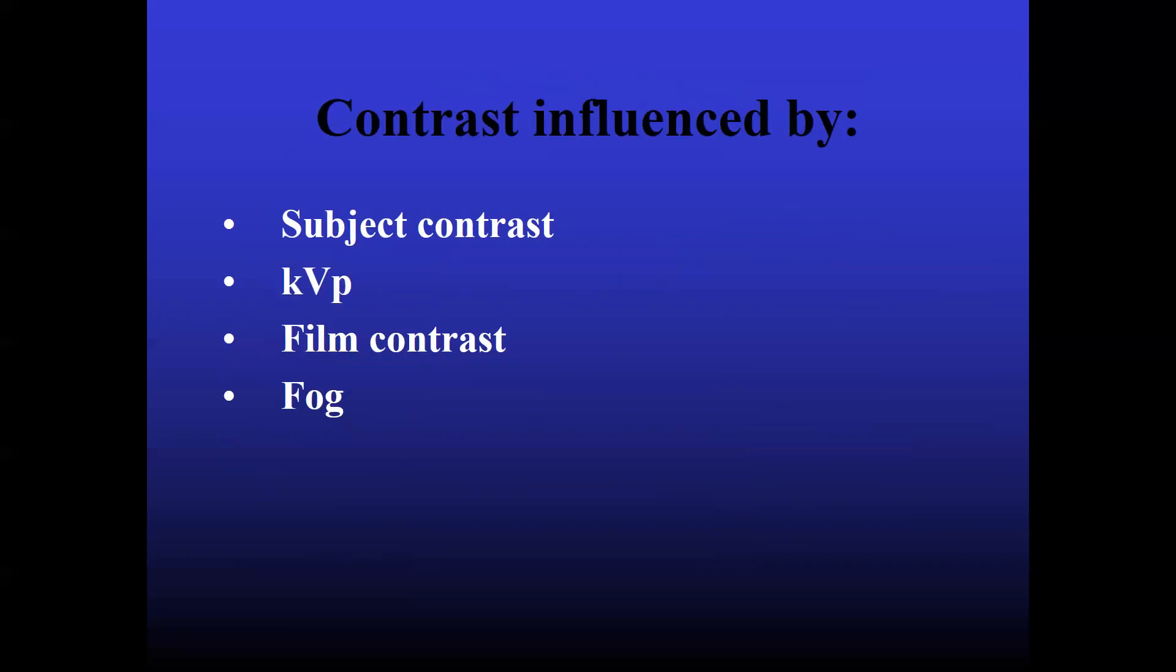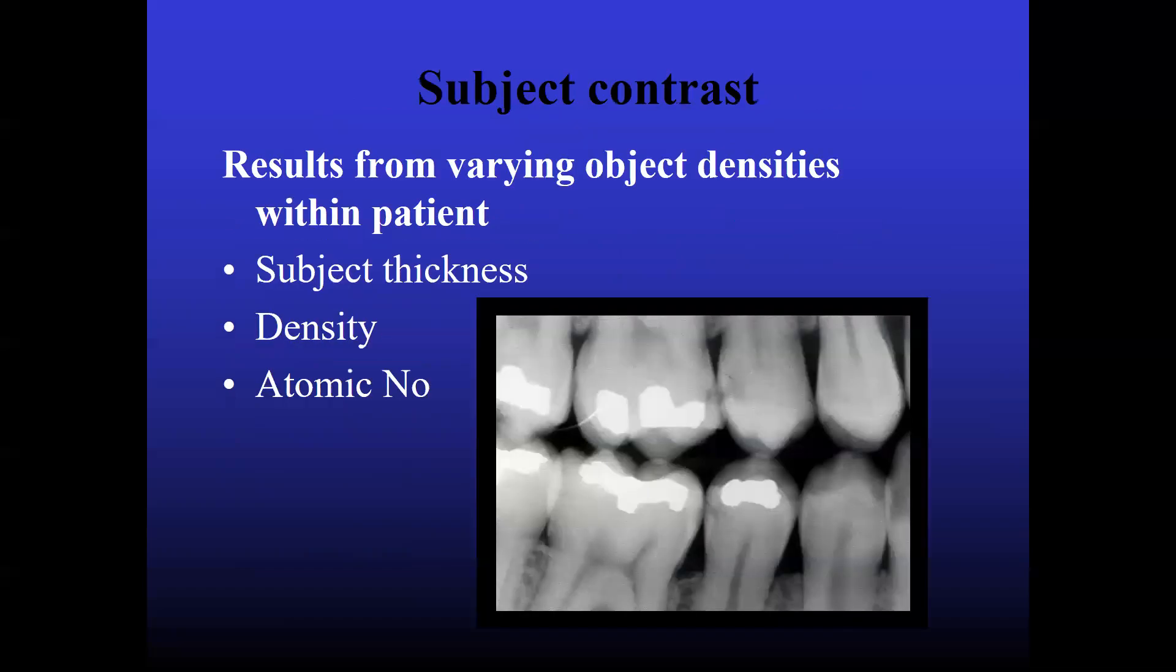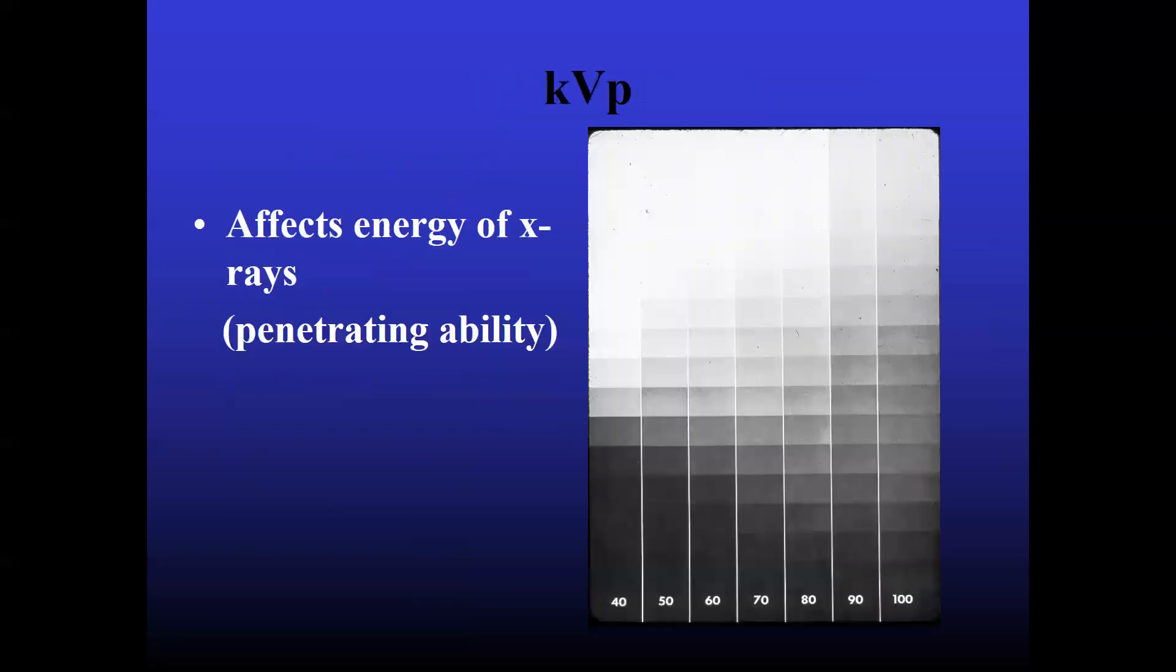So the contrast is influenced by subject contrast, KVP, film contrast, and fog. Subject contrast results from varying object densities within patient. That is, subject thickness, density, and the atomic number.